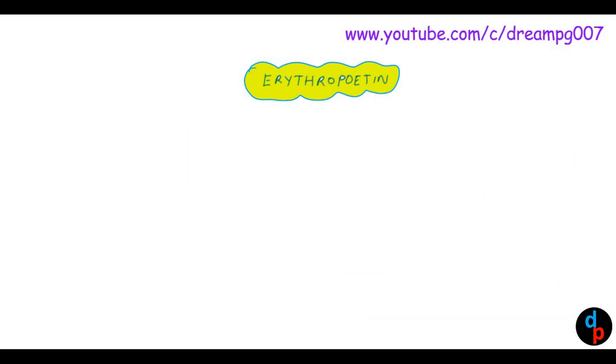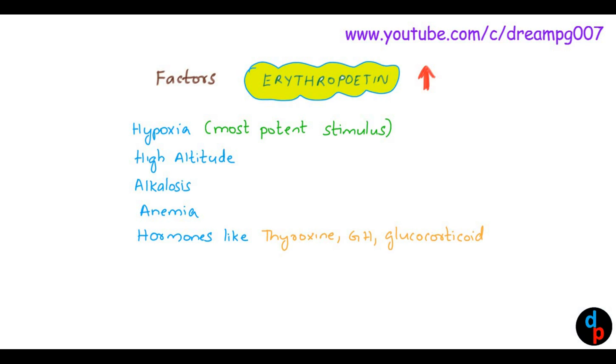There are factors that increase erythropoietin levels and factors that decrease it. The most important stimulus is hypoxia. Other factors that increase erythropoietin include high altitude, alkalosis, anemia, hormones like thyroxine, growth hormone, glucocorticoids, prolactin, ACTH, androgens, and vasoconstrictor drugs.